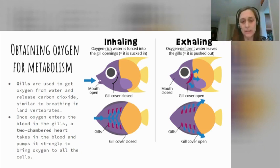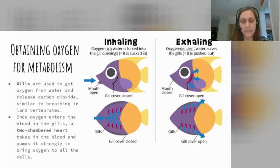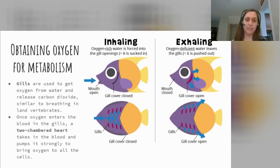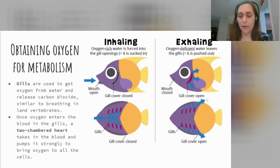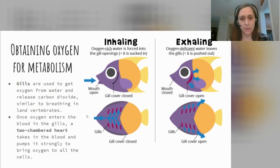Oxygen comes in dissolved in the water, comes in the mouth, and goes into the gills inside the fish. In the gills, that oxygen-rich water lets oxygen pass through the gills into the blood in the blood vessels, and that lets lots of oxygen into the blood. So now there's oxygen in the blood, which is what we wanted. There's also carbon dioxide in there that they need to get rid of. As they exhale, they push water out from the gills through the gill cover, and that water takes the extra carbon dioxide back out into the surrounding water.